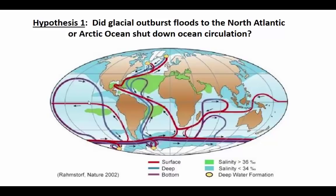Some scientists think that all these things are related and have come up with hypotheses to explain the Younger Dryas cooling episode. The first hypothesis is that glacial outburst floods might have flowed into the North Atlantic Ocean or into the Arctic Ocean and actually shut down thermohaline circulation — the idea that warm ocean currents bring warm water into the North Atlantic, and as that water cools and becomes salty, it sinks and is transported back to the south, acting as a conveyor belt. The idea is that a flood event could have shut down this deep water formation and stopped thermohaline circulation, essentially cutting off a source of warm water to the North Atlantic and leading to the big cold spike in the Younger Dryas.